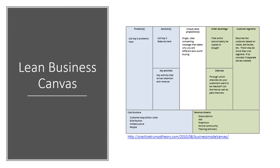The cost structure covers your customer acquisition costs — those costs incurred to actually get a client — as well as the cost of distribution, infrastructure, and people you need to hire. Finally, you'll describe various revenue streams: whether through subscriptions, ads, premium features, an online community, training seminars, or other streams not listed here.